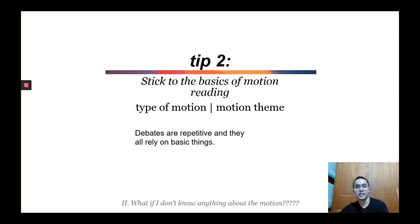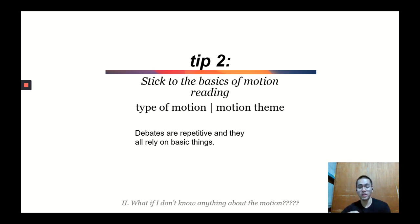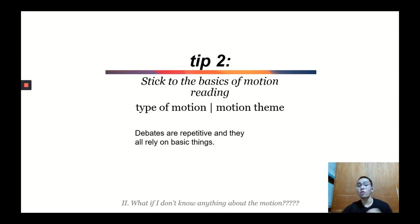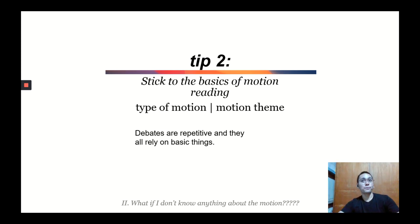The second tip is to stick to the basics of motion reading. There are two things to look into: first, what is the type of motion, and second, what is the theme of the motion. I strongly believe — and a lot of people told me this when I was learning to debate — that debates are repetitive and rely on basic things. Everything you need to know about debating is just going back to the basics and getting them right.